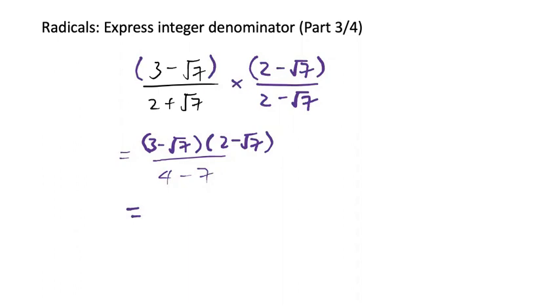Let me use a different color to make it easier. There we go. So 3 times 2 would be 6, minus 3 root 7 minus 2 root 7, plus 7.